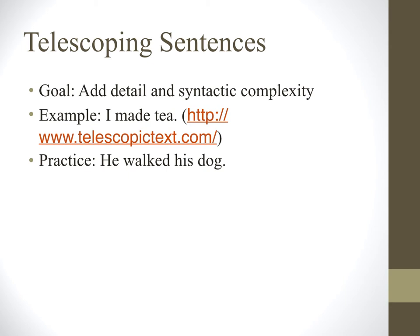Now I'd like you to try creating your own telescoping sentence with at least 10 expansions, starting with the sentence: He walked his dog. Pause the lecture now and figure out 10 expansions of the sentence. I don't expect you to create a webtext like the tea example, so you can just write the sentence 10 times adding a detail or description each time. The original sentence is available on the exercises document under exercise number 2.